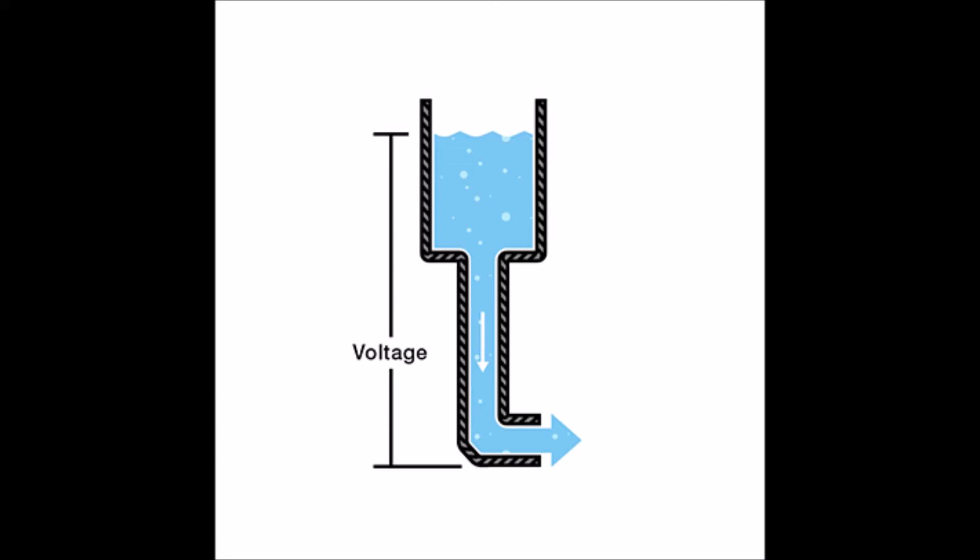When we talk about voltage, current, and resistance, it's easier to understand by imagining a water pipe connected to the bottom of a water tank. Water flows through the pipe due to the pressure from gravity pushing down on the water in the tank. This pressure is the voltage. The higher the pressure, the faster the water moves through the pipe. By the same token, the higher the voltage, the greater the speed and force with which electricity moves through a wire or material.